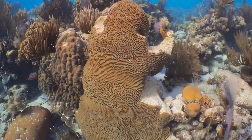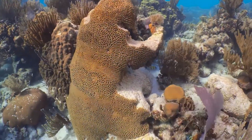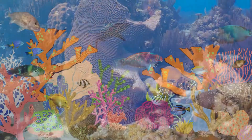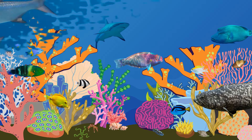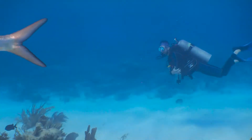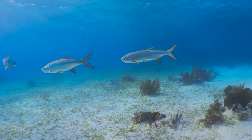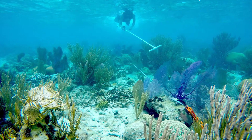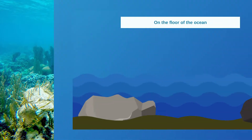Over time, reef species have changed, but the functions and roles of the different species have remained similar. In this video, we will have a general overview of how the ecosystem is built, showing some of the major plant and animal groups that are part of these complex systems. Scientists from around the world work together to study all the plants and animals that live in these reef systems so they can better understand changes over time. Here, our scientists present step by step how the biodiversity of a reef system is built.